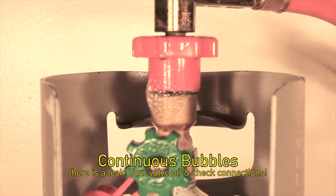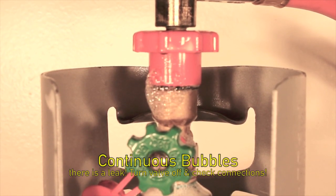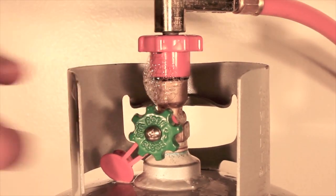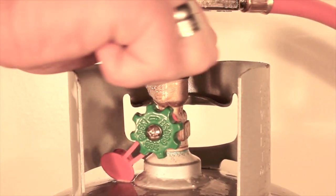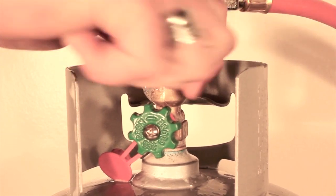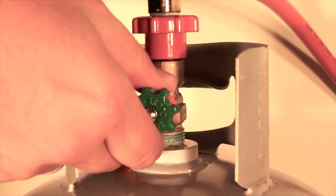If you see continuous bubbles forming, this means you could have a leak. Proceed then to turn off your cylinder valve and re-tighten your connections. Then to be safe, redo the leak test.